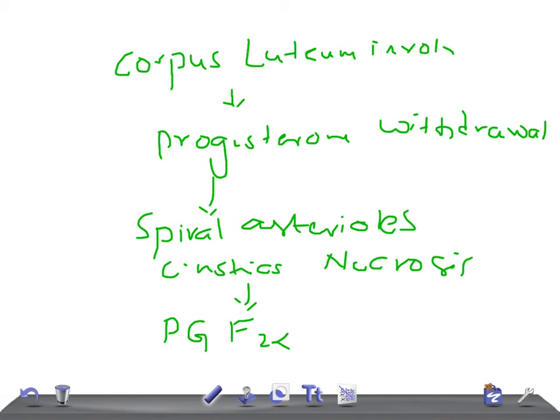Because of this PGF2 alpha, the patient might complain of nausea, abdominal pain, vomiting, and sometimes diarrhea.